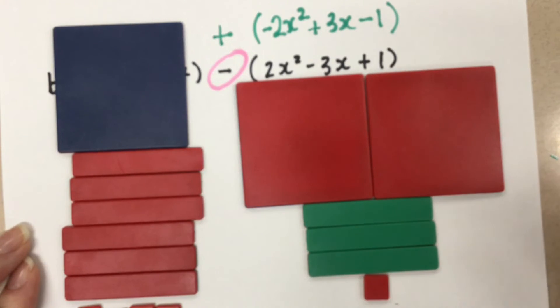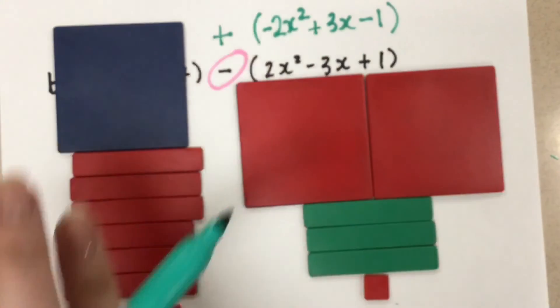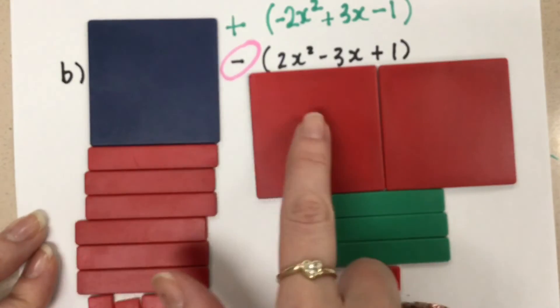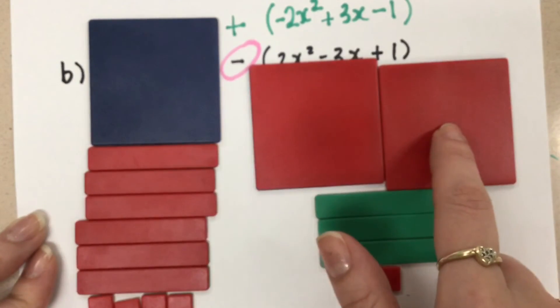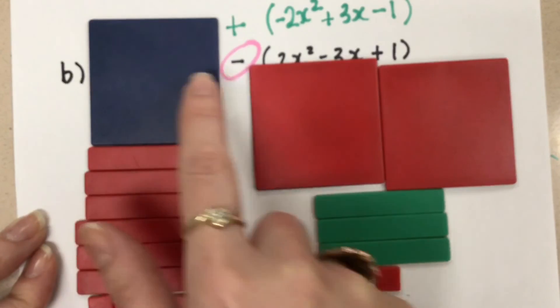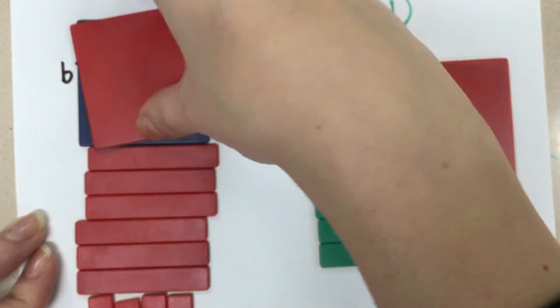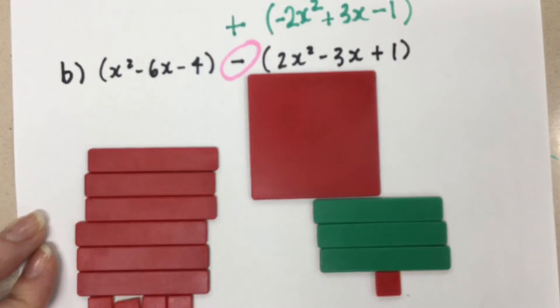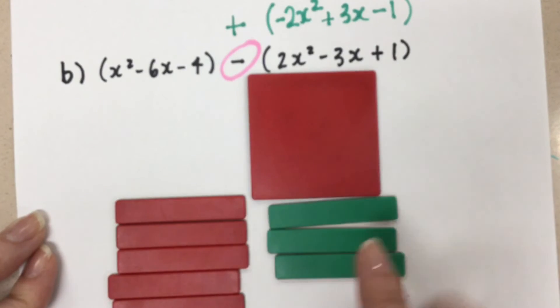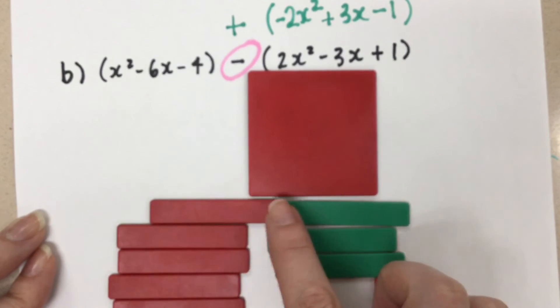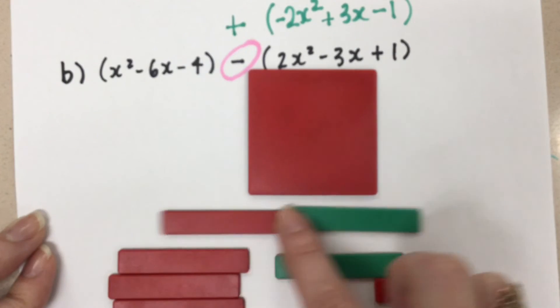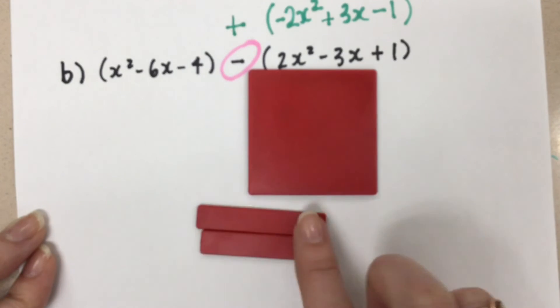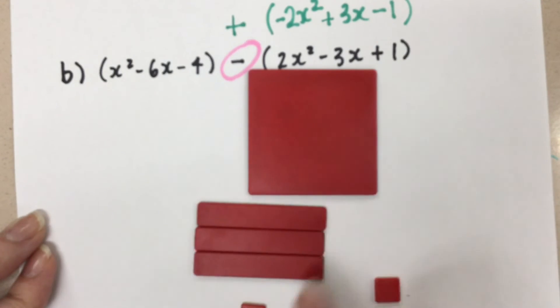And at this point, this is like the previous question we did, we can combine all of these tiles together. In the first term here, we have a positive x squared and negative 2x squared. So when we add these together, that creates a zero pair. We're going to get rid of that tile and we're just left with this one. With our x's, we do the same thing, removing zero pairs, and now we just have negative 3x's left.